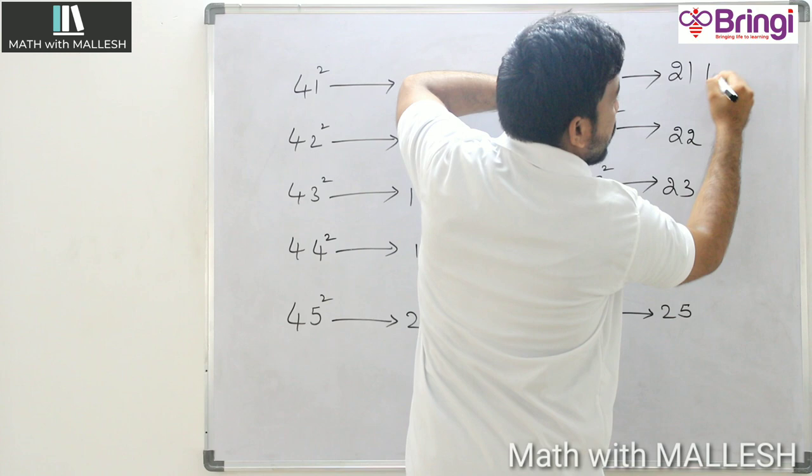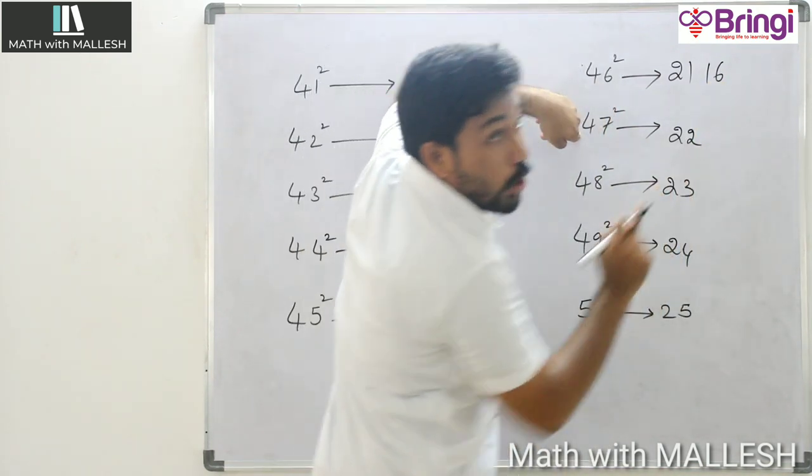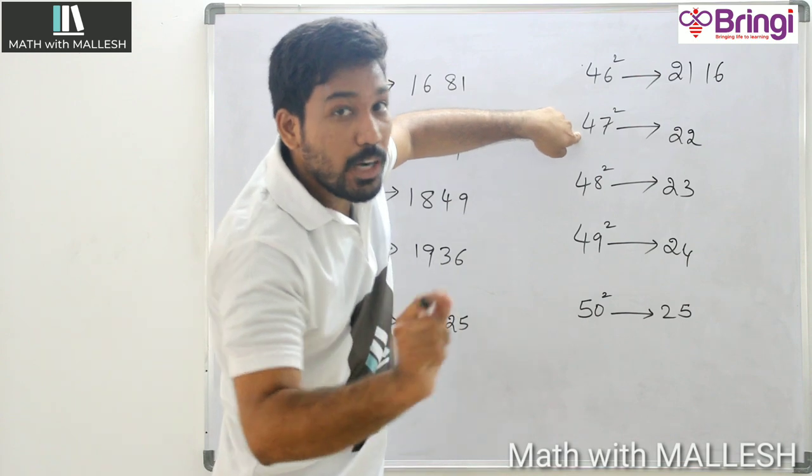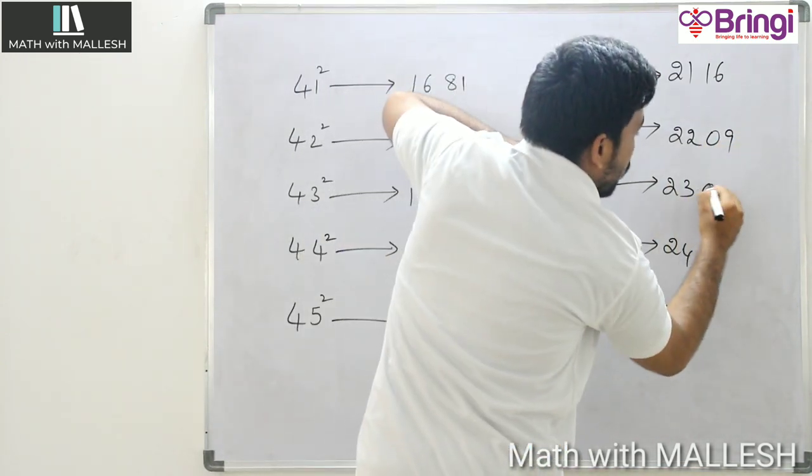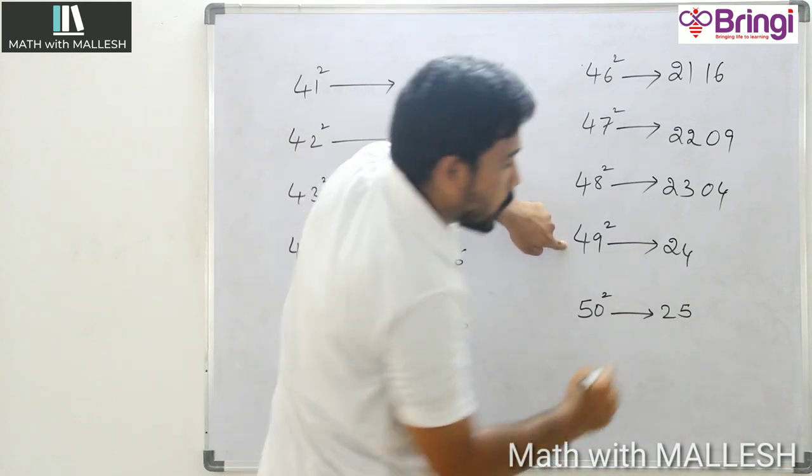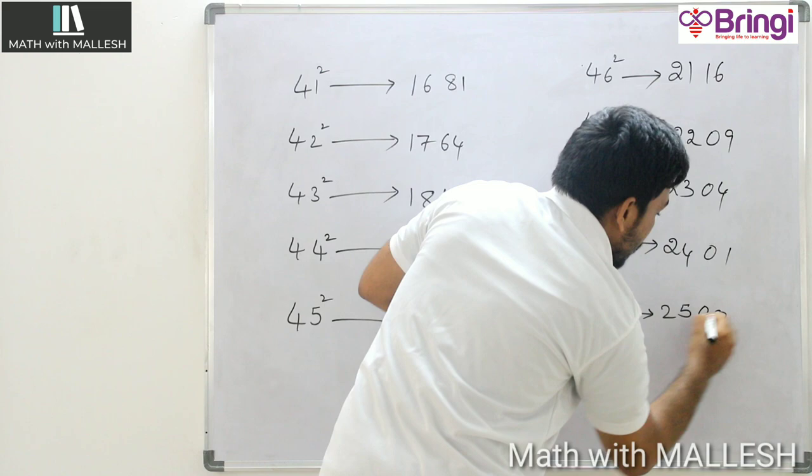4 square is 16. 3 square, it is not 9, it is 09. 2 square is 4. 1 square is 1. 0 square is 0.